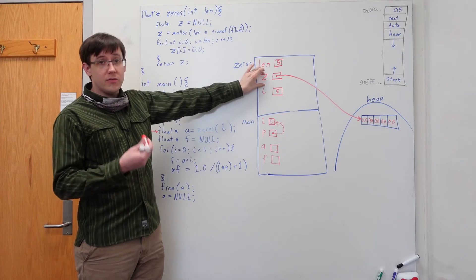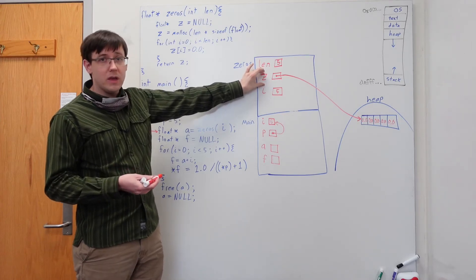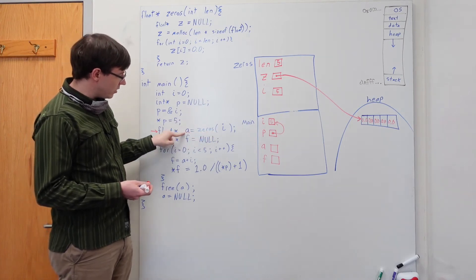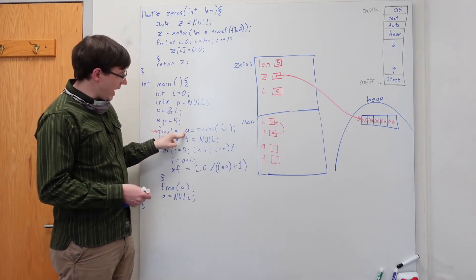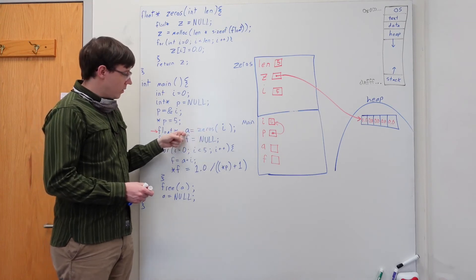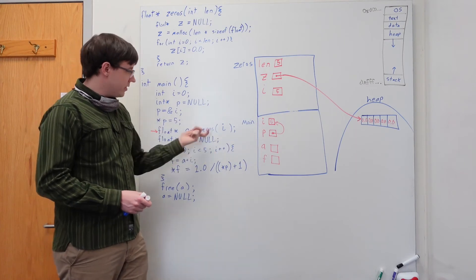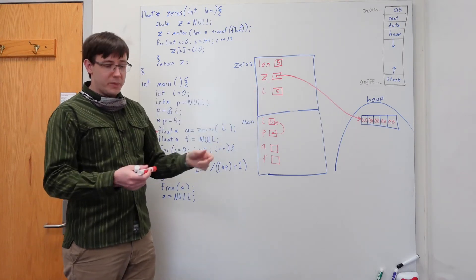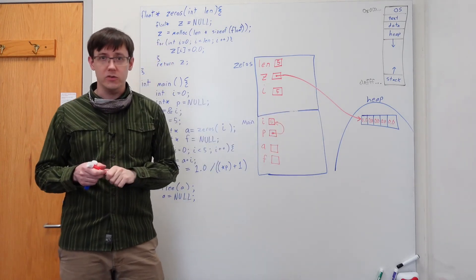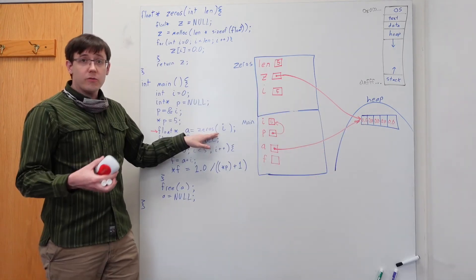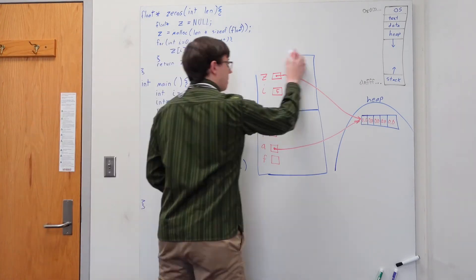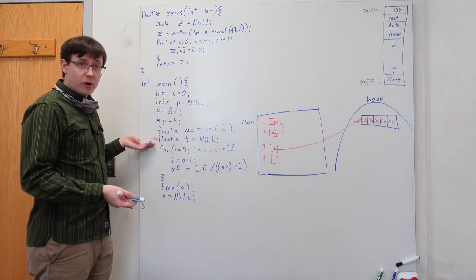When we return z, the value of z — which is a memory address — gets returned from the function and assigned into the variable a. When we come back to main and resume execution after the function call, a will hold the same address that was stored in z, meaning the a pointer points to the same heap array that z was pointing to. Now that we've returned from our call to the zeros function, the stack frame for that function goes away.